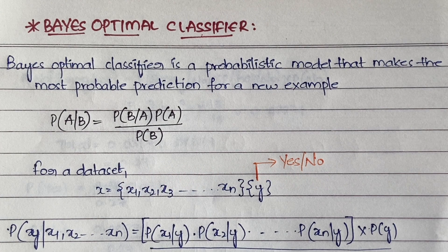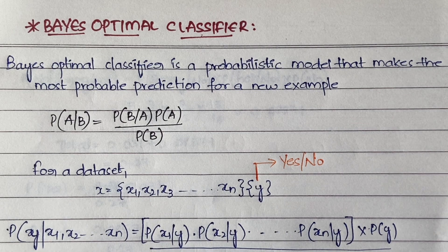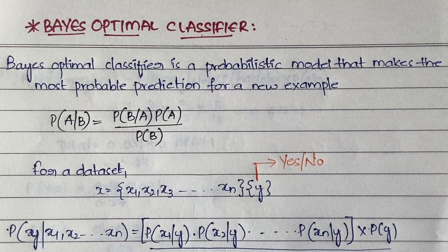Hello everyone, welcome back to my YouTube channel. In today's video we are going to learn about the Bayes Optimal Classifier. I've already explained what Bayes theorem is — first watch that video if you have not yet, because on the basis of that theorem we are going to define this, the Naive Bayes classifier, and the Bayesian belief networks. Everything depends on the Bayes theorem concept.